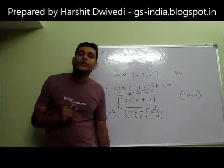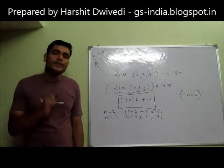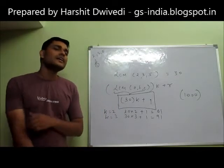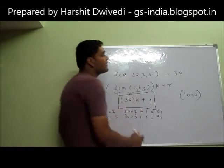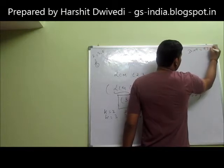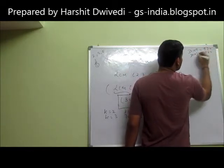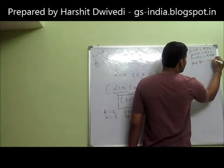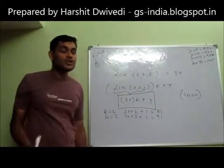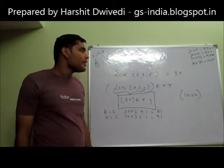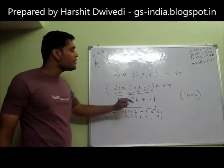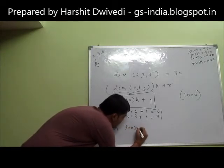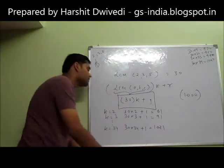Now we use a bit of calculation. 30×10 = 300, 30×20 = 600, 30×30 = 900 — still not crossed 1000. 30×31 = 930, 30×32 = 960, 30×33 = 990, 30×34 = 1020. As soon as we do 30×34, we reach 1020. 1020 is a number greater than 1000 and exactly divisible by 2, 3 and 5. So at K=34: 30×34 + 1 = 1021. My answer is 1021.